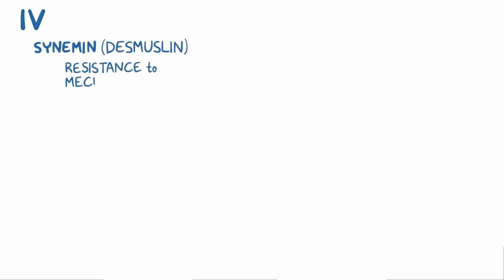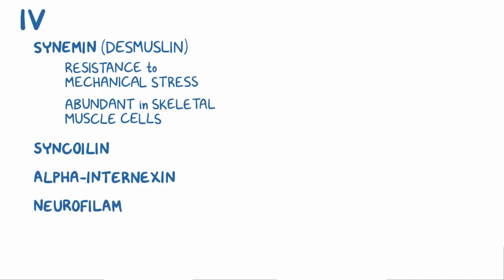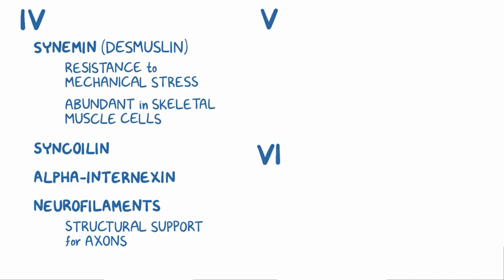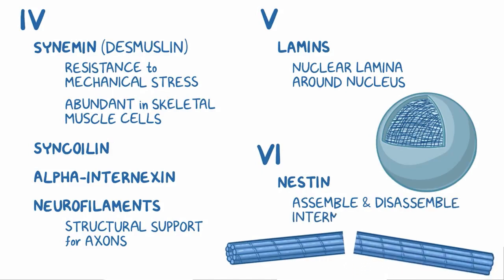Type 4 intermediate filaments include synemin, also called desmusilin, which provides resistance to mechanical stress and is especially abundant in skeletal muscle cells. Another muscle-specific type 4 intermediate protein is syncoilin. There are also neuron-specific type 4 filaments, like alpha-internexin, and a group called neurofilaments, which provide structural support for axons. Type 5 intermediate filaments are lamins, which make up the nuclear lamina around the nucleus of the cell. Finally, type 6 intermediate filaments include nestin, which helps assemble and disassemble other intermediate filaments.